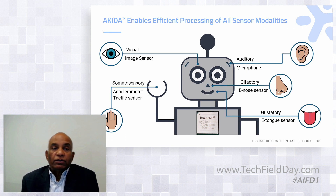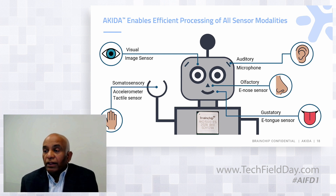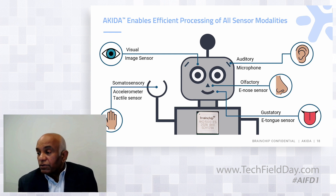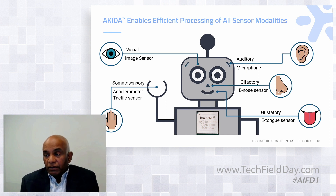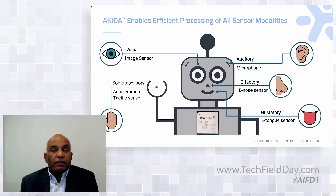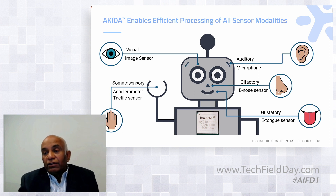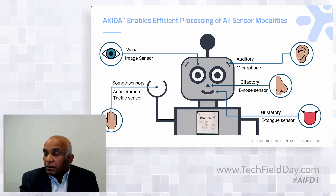You can do keyword spotting, listen to hum, noise, or audio signatures. You can do olfactory applications like an E-nose sensor — it can smell different industrial gases or even COVID. The gustatory sensor, an E-tongue, can distinguish between different tastes. Or somatosensory tactile feedback like vibration analysis or experimental data from different sensors. If you implant a brain chip into a robot, it can see, hear, smell, taste, and feel — all the senses a human being has — and it can do it very efficiently at very low power, next to the sensor.